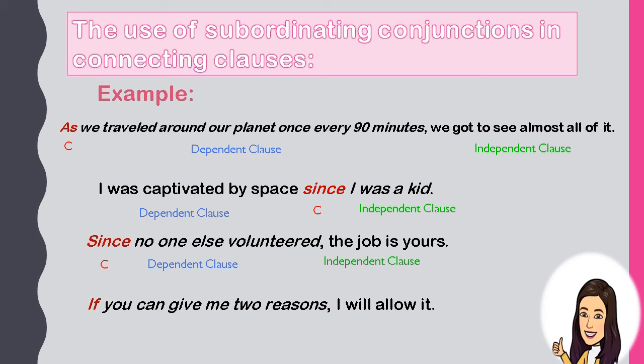Another example: 'If you can give me two reasons, I will allow it.' 'If' is the subordinating conjunction. 'If you can give me two reasons' is the dependent clause. 'I will allow it' is the independent clause.